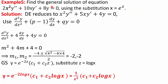Example: Find the general solution of 2x²y'' + 10xy' + 8y = 0 using x = e^z. Dividing by 2 gives x²y'' + 5xy' + 4y = 0, so p = 5 and q = 4. Substituting into the transformed equation gives d²y/dz² + 4·dy/dz + 4y = 0. The auxiliary equation m² + 4m + 4 = 0 gives repeated roots −2. So the general solution in z is y = e^(−2z)(c1 + c2·z). Substituting z = log x gives y = e^(−2 log x)(c1 + c2·log x) = x^(−2)(c1 + c2·log x).